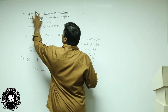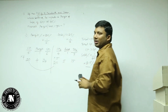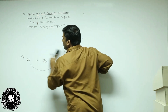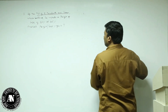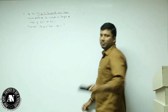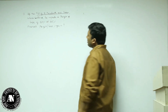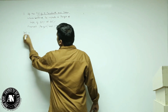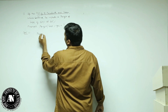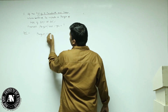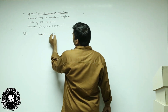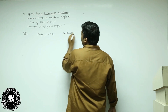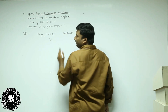Second question: the only change is that the selling price of two products are the same. First transaction profit percentage is 20%. Loss percentage is 25%.